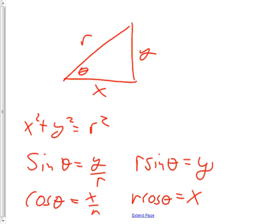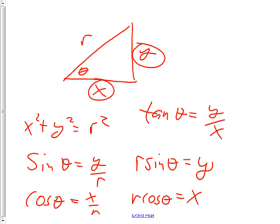Where's the sixth one? Tangent. So tangent of theta is equal to y over x — opposite over adjacent.